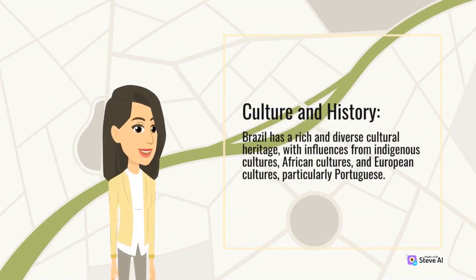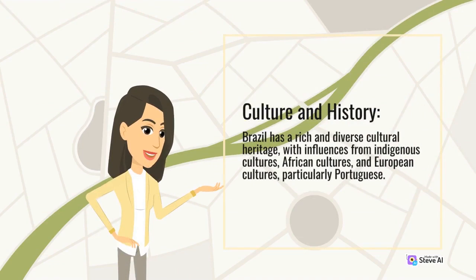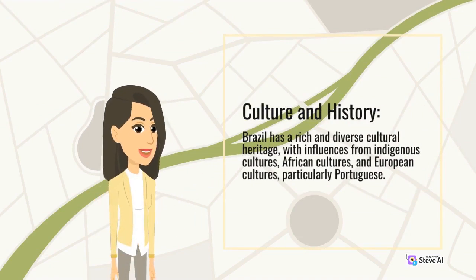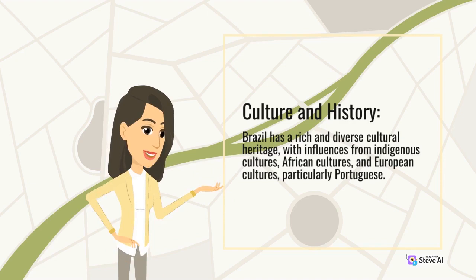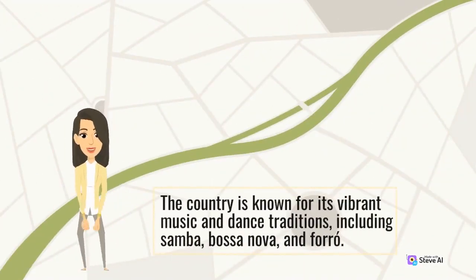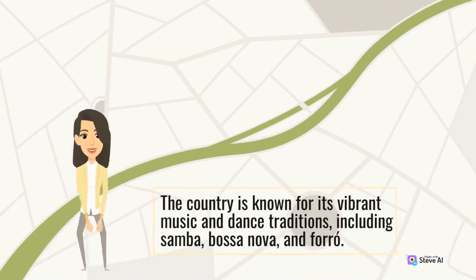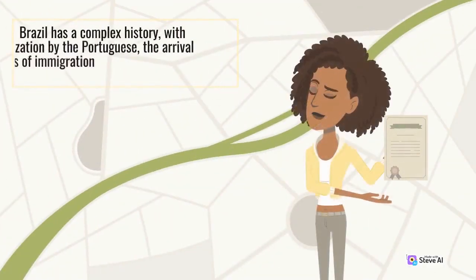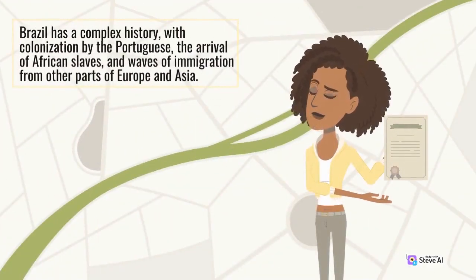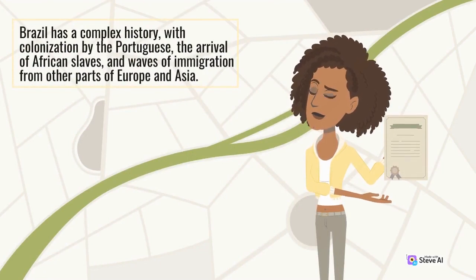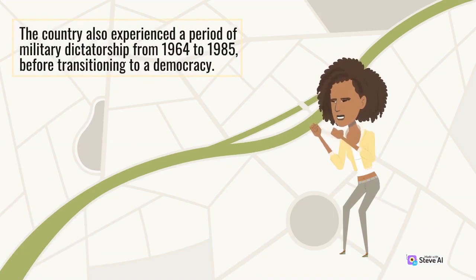Brazil has a rich and diverse cultural heritage, with influences from indigenous cultures, African cultures, and European cultures, particularly Portuguese. The country is known for its vibrant music and dance traditions, including Samba, Bossa Nova, and Forró. Brazil has a complex history, with colonization by the Portuguese, the arrival of African slaves, and waves of immigration from other parts of Europe and Asia. The country also experienced a period of military dictatorship from 1964 to 1985, before transitioning to a democracy.